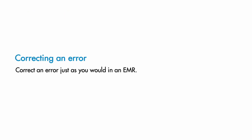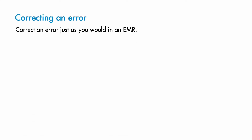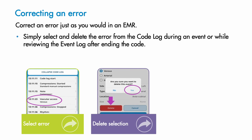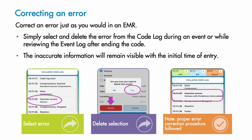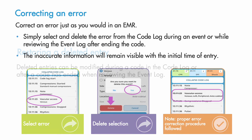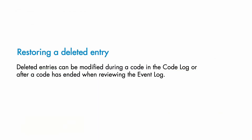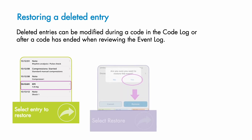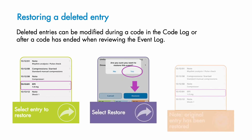Until a code is closed and uploaded, recorders can correct errors in CodeWriter the same way they are corrected in electronic medical record charting. Simply select the error in the code log during the event or in the event log after the code is ended and tap Delete. The app will ask you to confirm the deletion. Once deleted, the information and initial time of entry remain visible but now feature a line through them. Previously deleted entries can be restored by selecting the entry and tapping the Restore button, removing the strikethrough and retaining the original entry and timestamp.